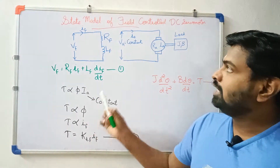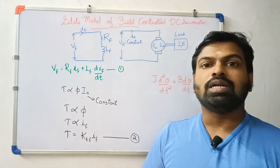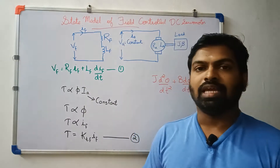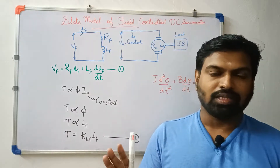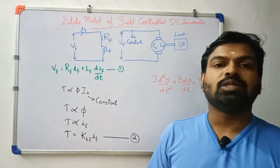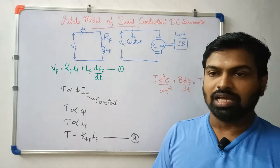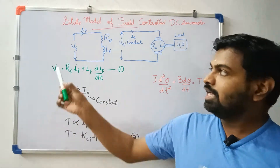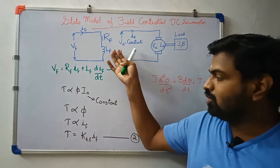Now we are going to talk about the torque. The torque of a DC servomotor is 5·iA. We are going to talk about the torque constant. The torque is proportional to flux. The flux is controlled by IF. If there is VF, there is IF. What is torque?